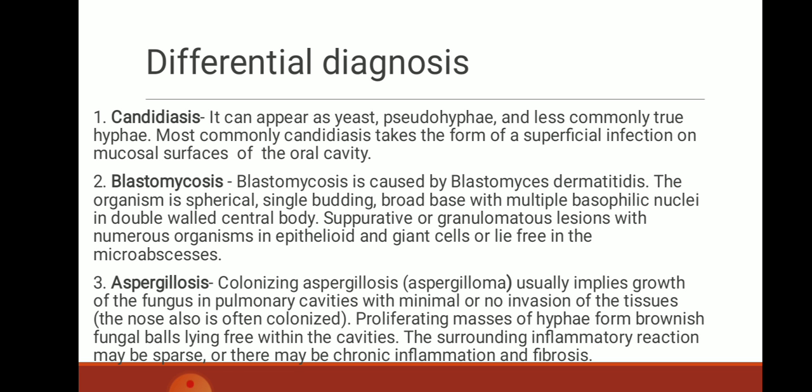Blastomycosis is caused by Blastomyces dermatitidis. The organism is spherical, single-budding, with broad-based cells having multiple basophilic nuclei in a double-walled cell body. Suppurative or granulomatous lesions contain numerous organisms in epithelioid and giant cells, lying free in the microabscesses.